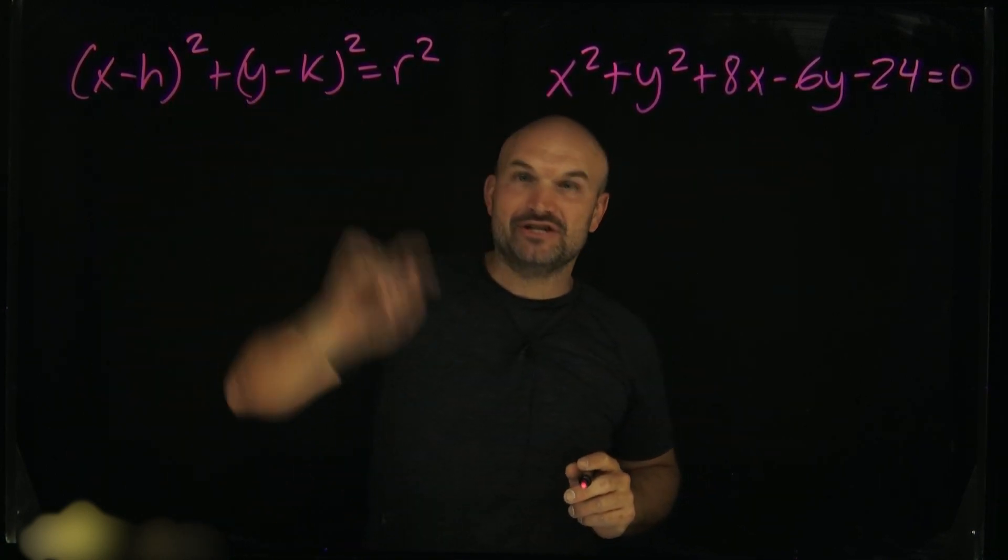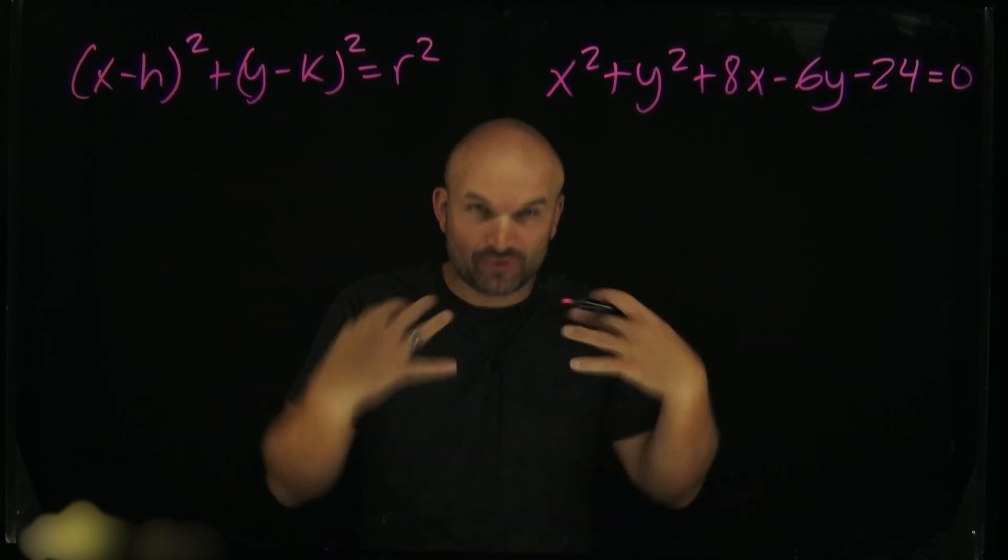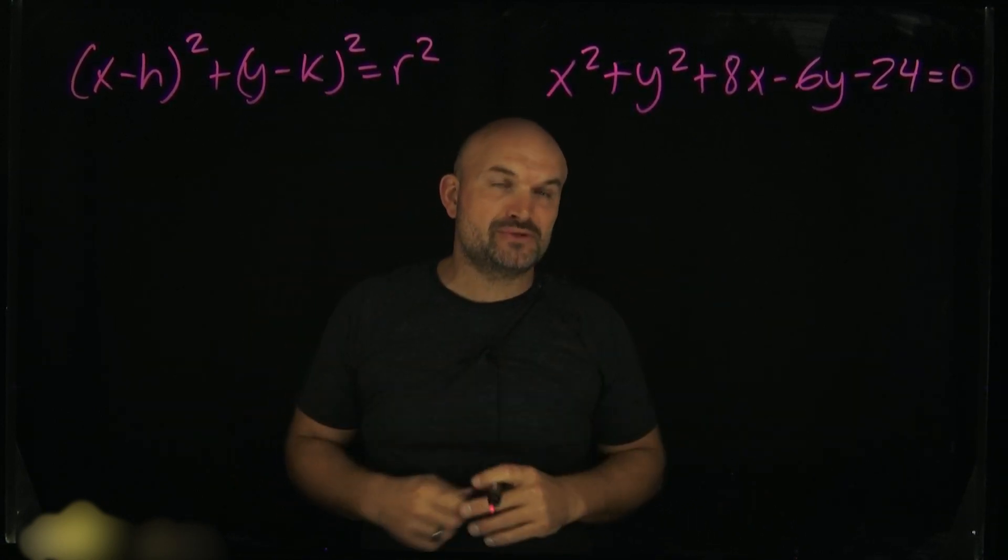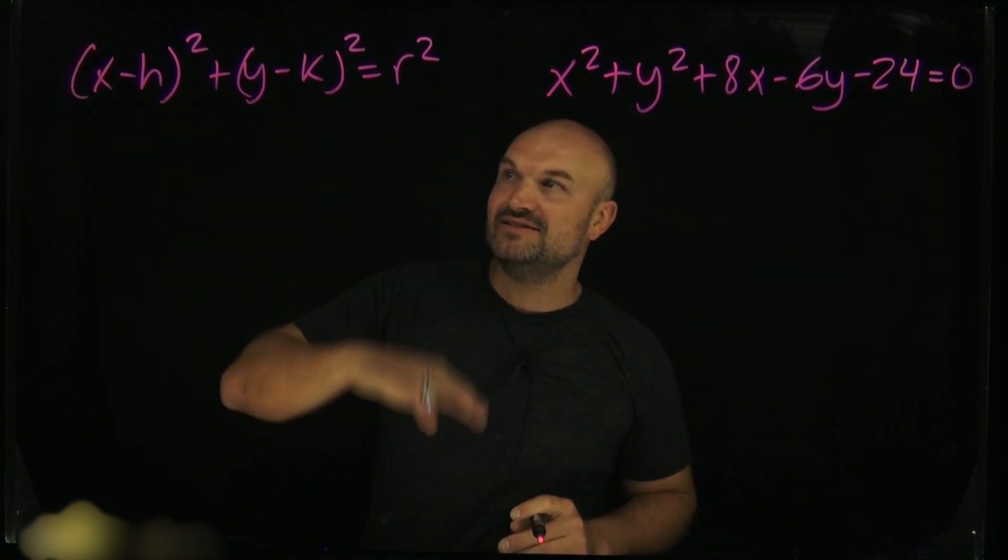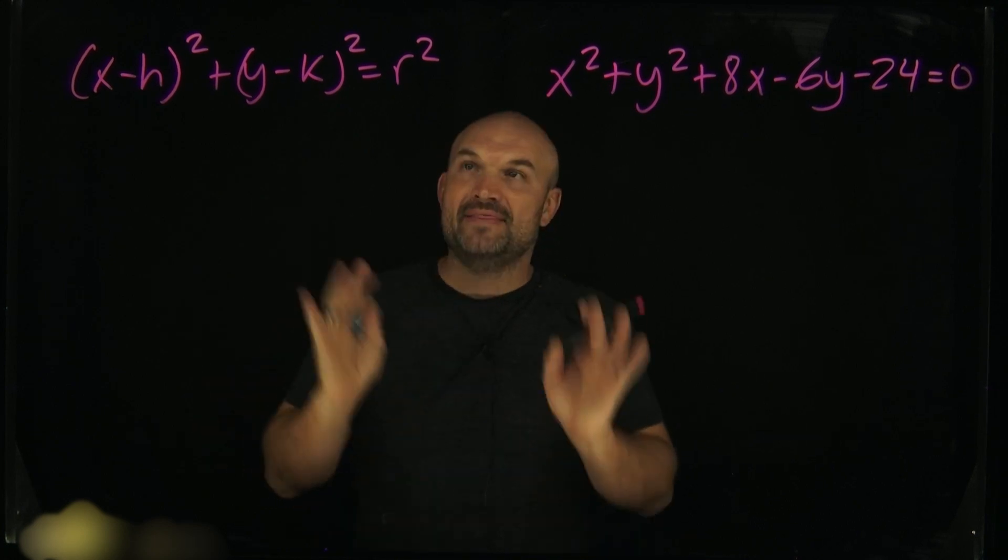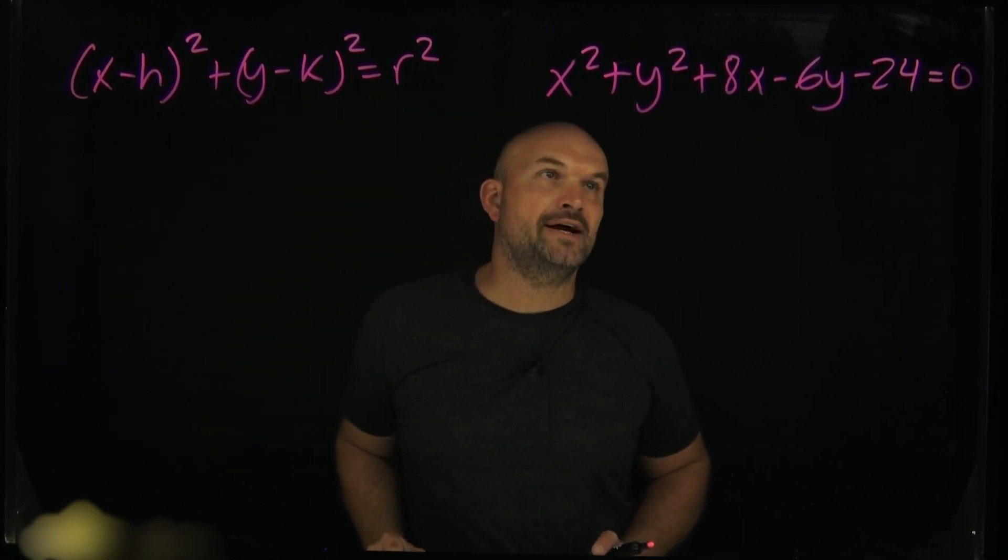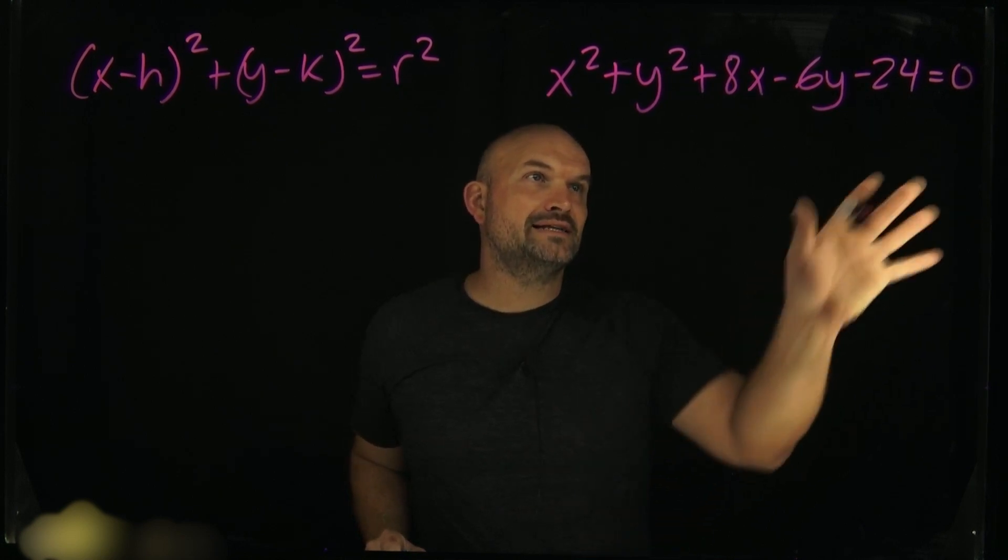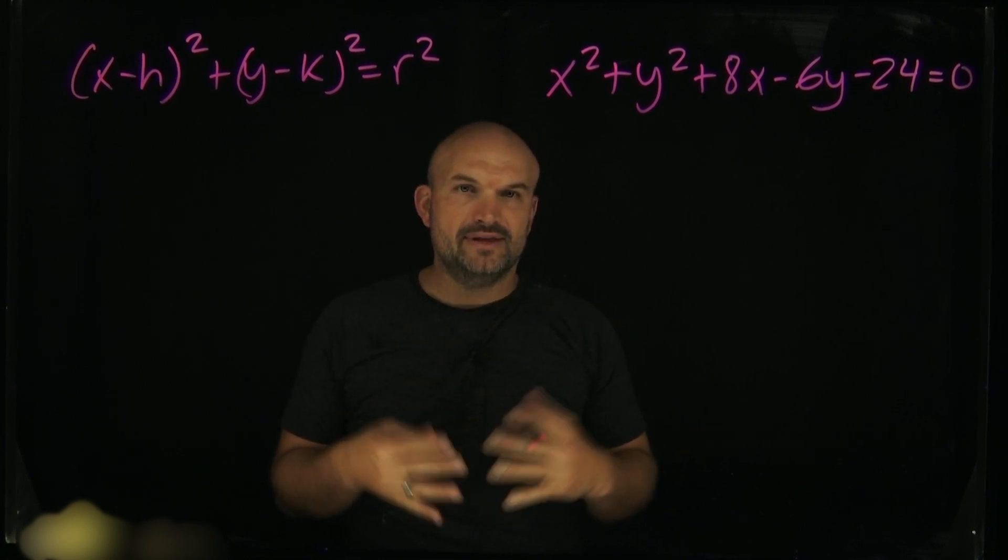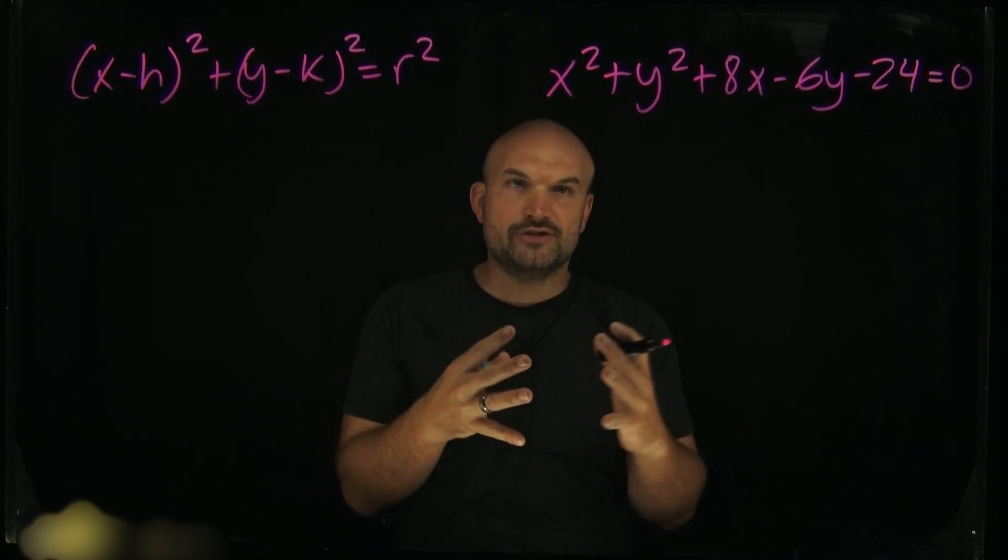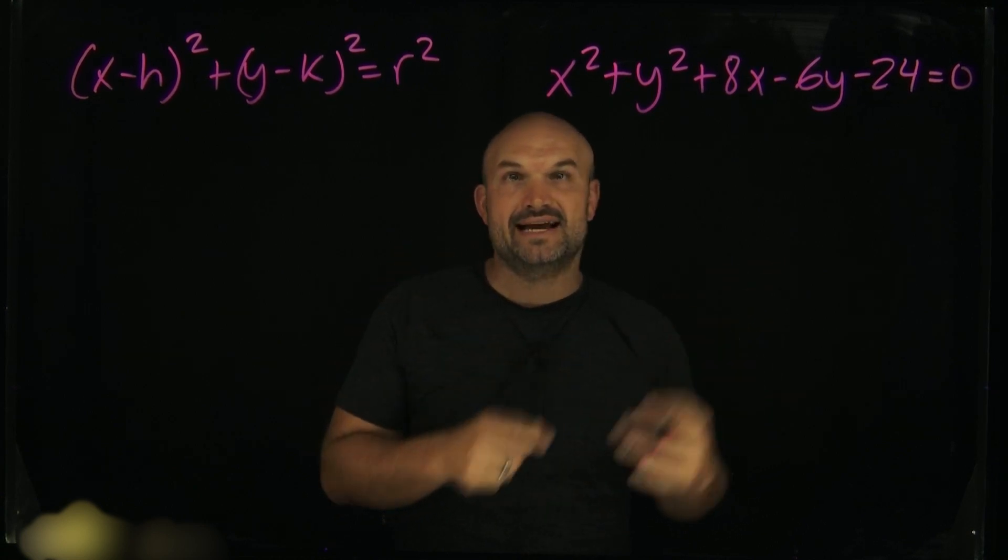When we want to identify h and k, we need to create this binomial square, and the process for creating the binomial square is called completing the square. We're going to have to complete the square for the x values as well as for the y values, and then set it equal to r squared so we can identify r. First thing, if we're going to complete the square for x's and y's, we're going to want to do them separately, so we're going to want to group them together. I'm going to rewrite this with x's and y's.